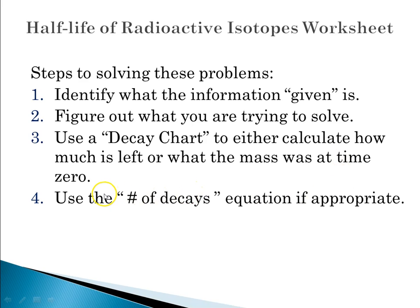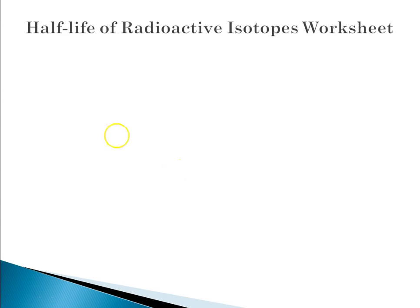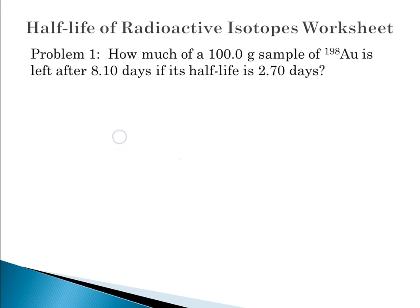And then sometimes you're going to use the number of decays equation, where the number of decays is equal to the time elapsed divided by the time it takes for half-life. So now we're ready to begin. Half-life of Radioactive Isotopes Worksheet, and we're going to start at the beginning with number one.